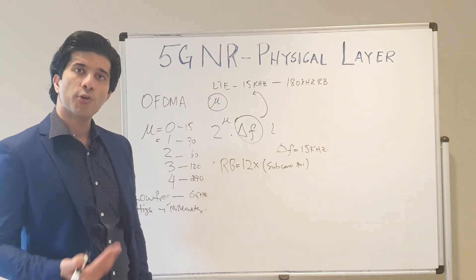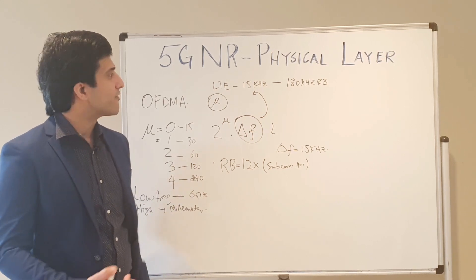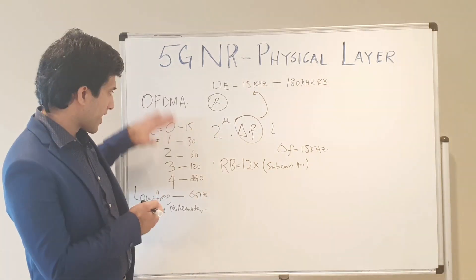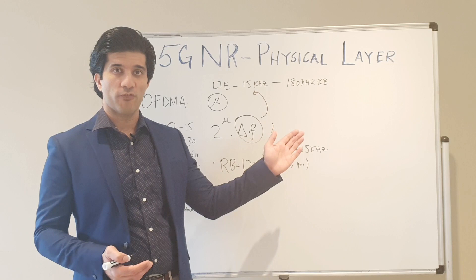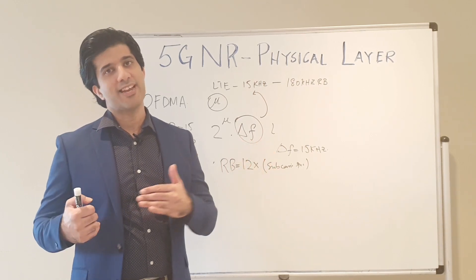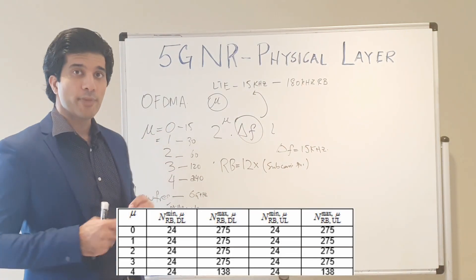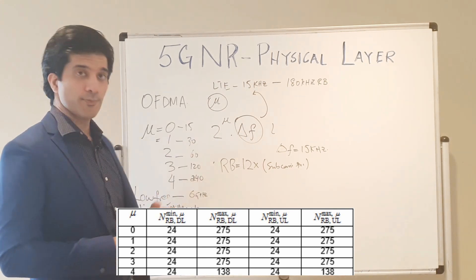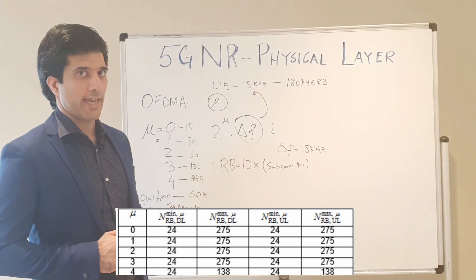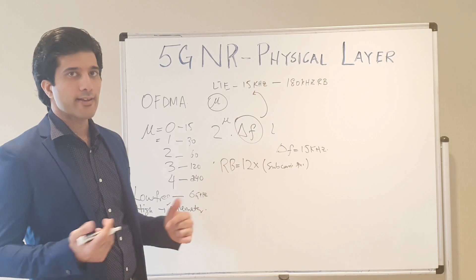In LTE you have a fixed subcarrier spacing and a fixed resource block width. In 5G, you have multiple options for resource block width. Instead of a fixed number of resource blocks per channel bandwidth, 5G defines a minimum and maximum number of resource blocks for each value of mu. For mu 0, 1, 2, and 3 the minimum is 24 resource blocks and the maximum is 275. For mu 4 the minimum is 24 and the maximum is 138.